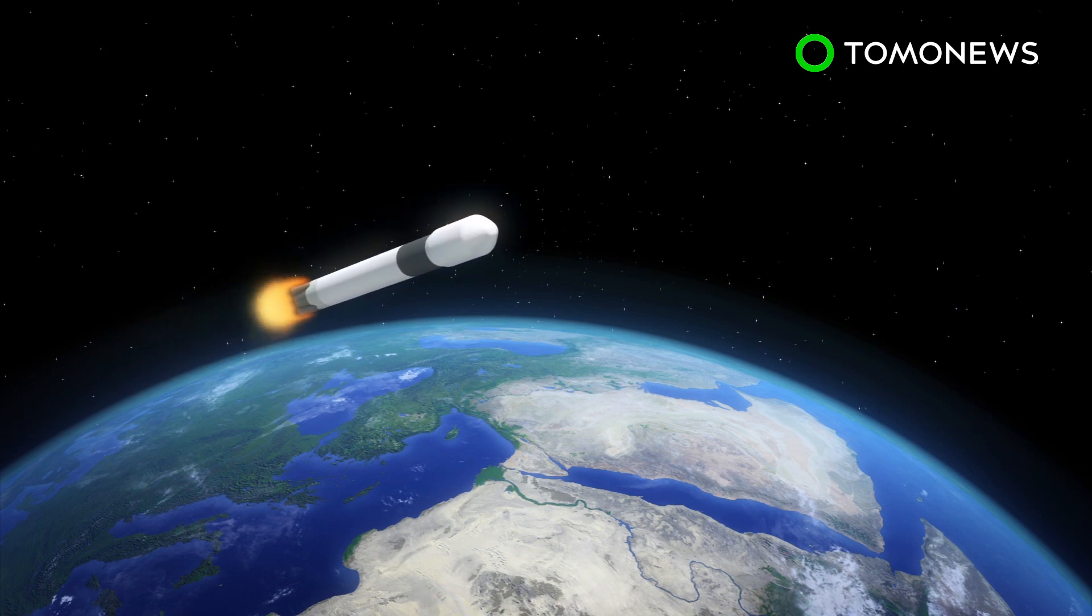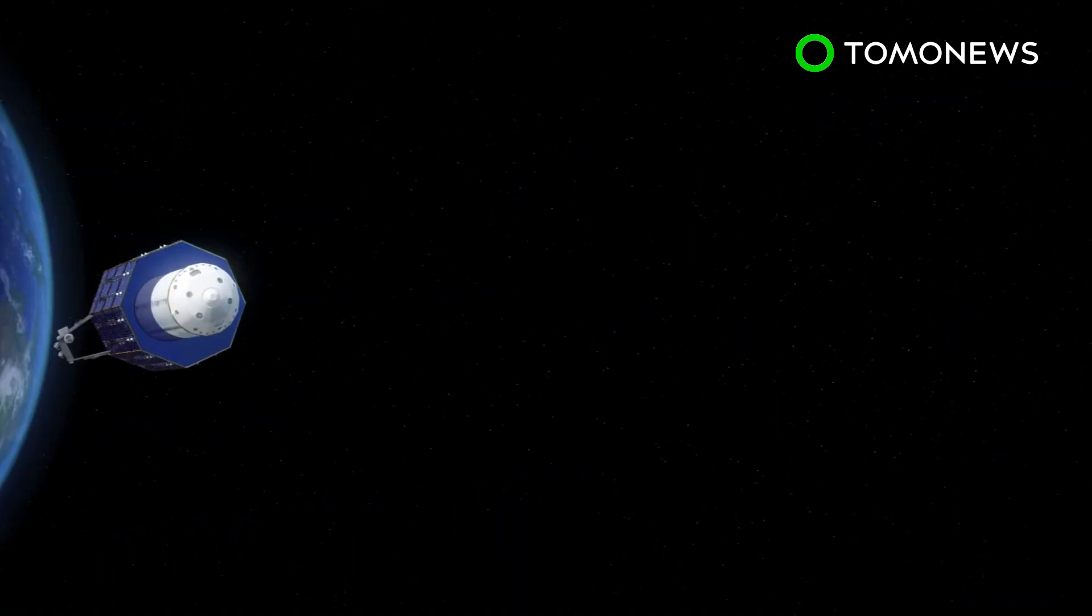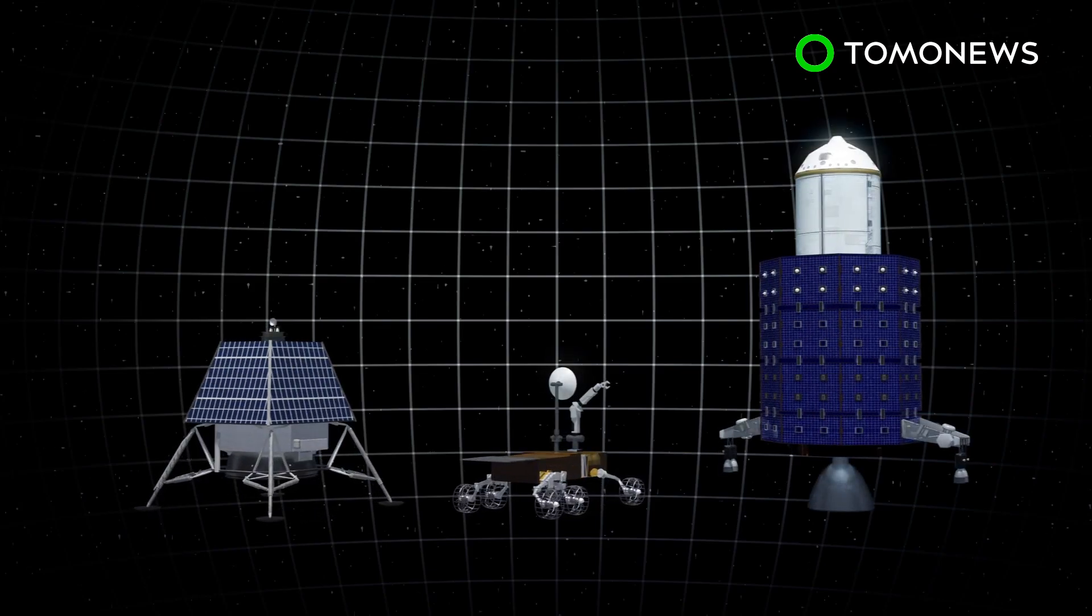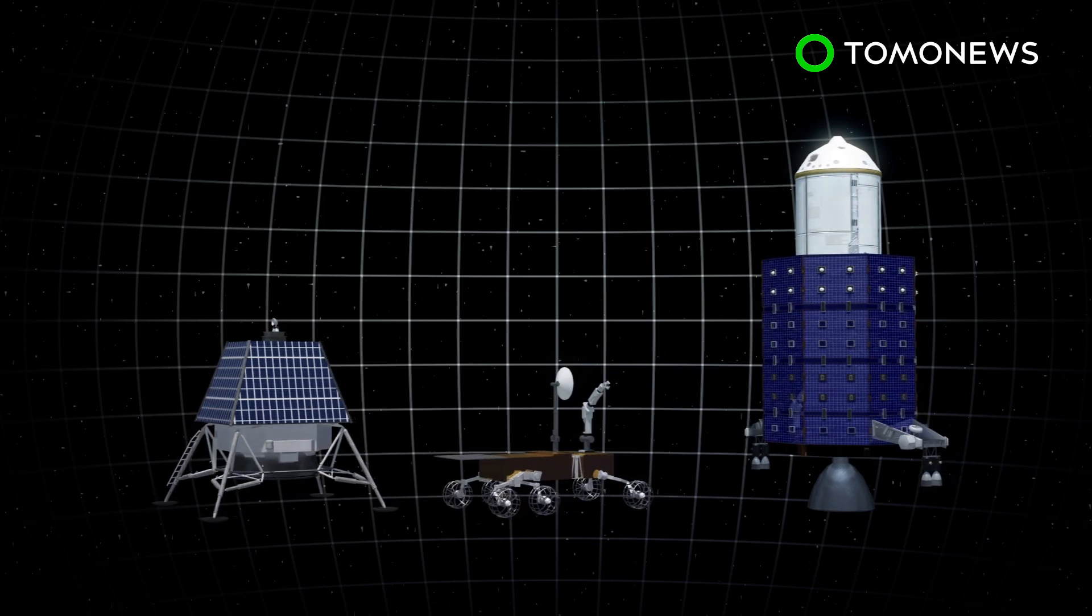According to the Times of India, this would have been the country's second moon mission. The Indian Space Research Organization, or ISRO, says the spacecraft comprises of a lander, a rover, and an orbiter.